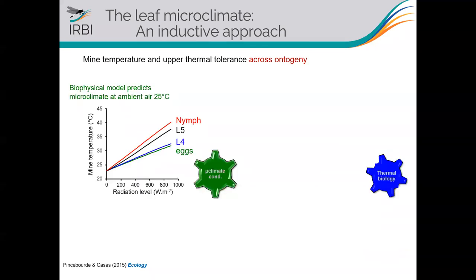Here is an example of model predictions. Running the model with ambient air at 25°C for all stages, you get predictions of mine temperature as a function of radiation level. All stages increase in temperature with more radiation. However, the rate of warming is much higher at the fourth and fifth larval stages compared to early stages, such that under full sun there is a difference of about eight degrees between early and late stages — due to higher near-infrared absorbance and stomatal closure during late stages.